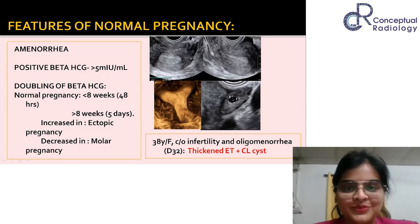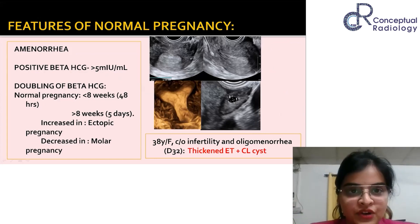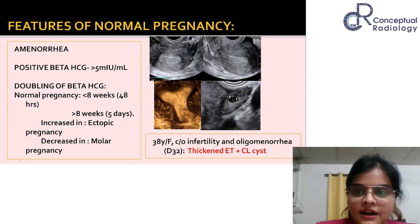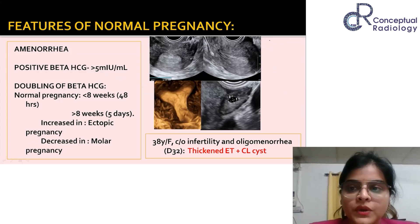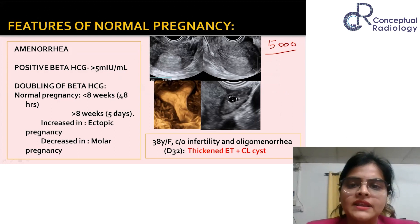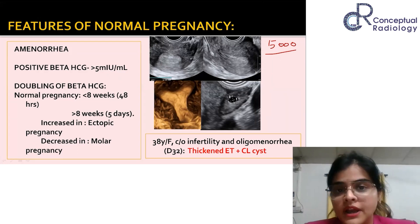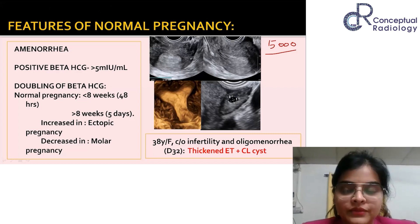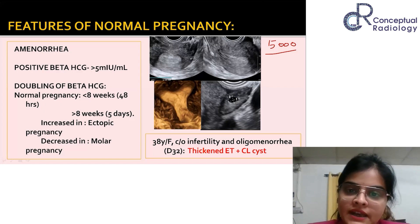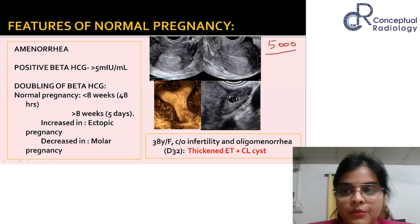Before starting, let's make this a little interactive — not to scare you, but to get you thinking. For example, a patient comes with a beta-hCG level of 5000 and you are not able to see a gestational sac on ultrasound. Is that normal? Think about this question in your mind — I won't ask you to answer right now.